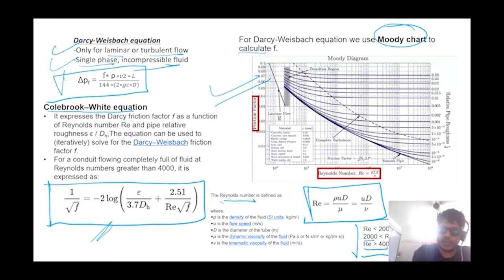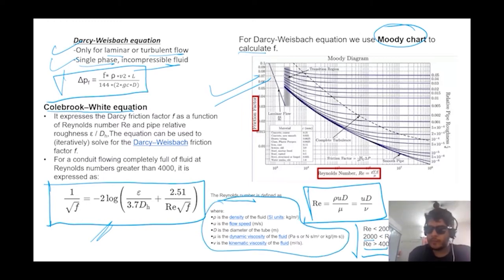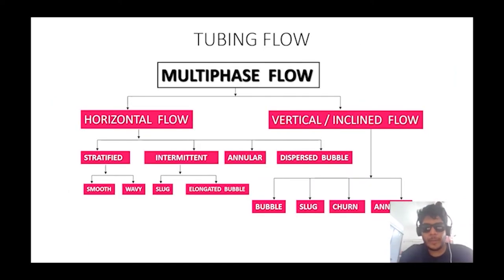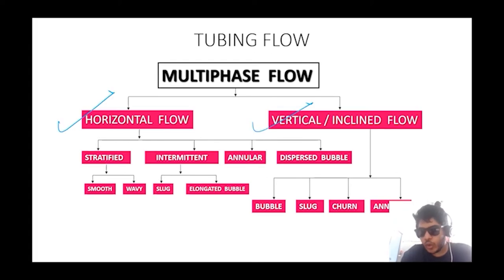In tubing, there won't be a single-phase flow — there will always be multiphase flow with liquid and gas flowing together. For a vertical well, the flow regimes can be: bubble flow, slug flow, churn flow, or annular flow. For a horizontal well, the regimes are stratified (smooth or wavy), intermittent (slug or elongated bubble), annular, or dispersed bubble flow.